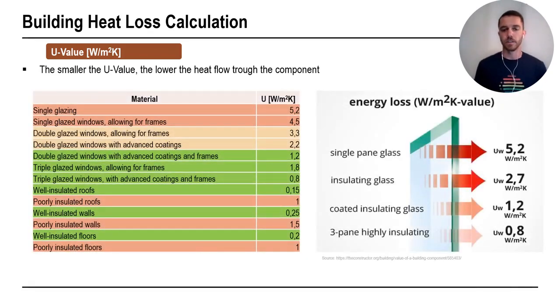Here on table and on this photo, you can see examples of some materials. So for example, if this is single glazed windows, U-value is 5.2 watt per square meter and Kelvin. And if we have double glazed windows, it's lower. For triple glazed windows, it's even lower. The same applies for roofs, walls and floors. So, with poor insulated roof, we have 1 watt per square meter and Kelvin. And for well insulated, we have 0.25.